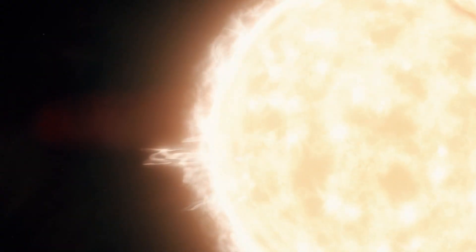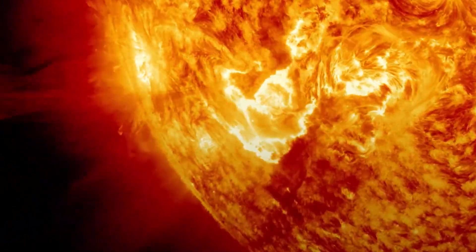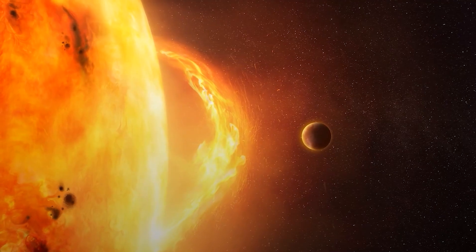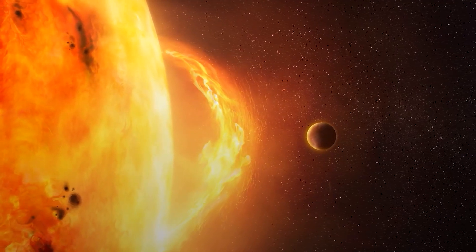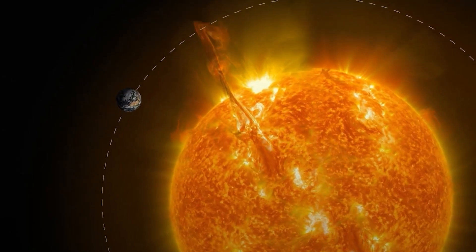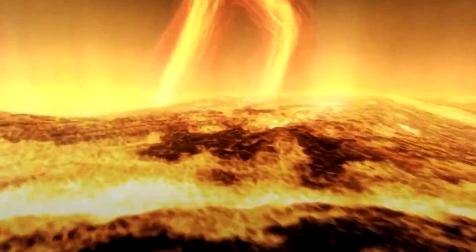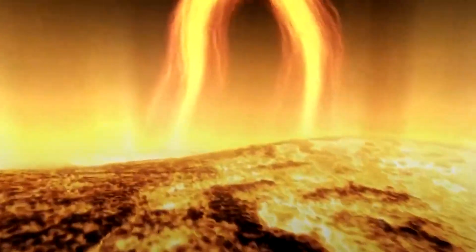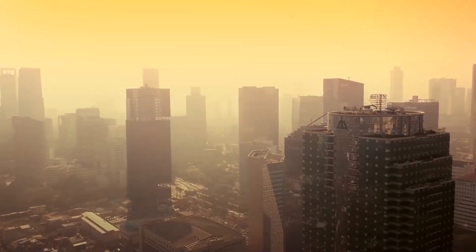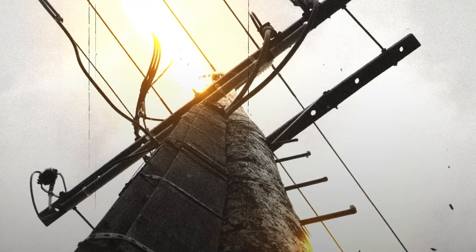The sun is a gigantic nuclear furnace, constantly boiling and churning. Sometimes it erupts with a massive burst of energy, a solar flare. These flares can be followed by a CME, which is like a giant bubble of super hot gas moving through space at millions of miles per hour. If one of these CMEs hits Earth directly, it could cause a geomagnetic super storm. The most shocking fact is what such a storm could do. It wouldn't turn off the lights for a few hours. It could knock out power grids across continents for weeks or even months, frying sensitive electronics and transformers.